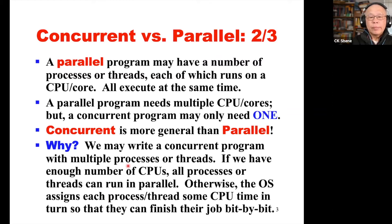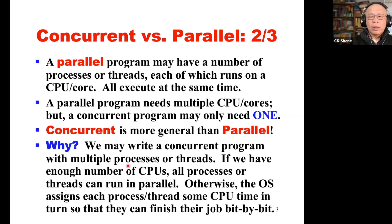We may write a concurrent program with multiple processes or threads. Your first exercise will be writing a program with multiple processes. You compile and run it on a system. If the system has enough CPUs, all processes or threads can run in parallel. Otherwise, the operating system assigns each process or thread some CPU time in turn so they can finish their job bit by bit. This explains the difference between parallel computing and concurrent computing, which we will learn this semester.